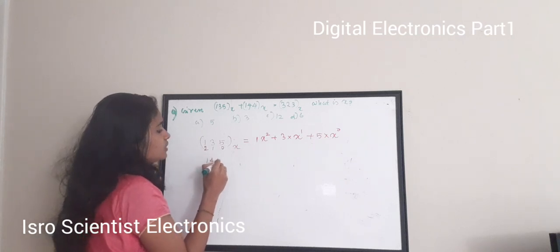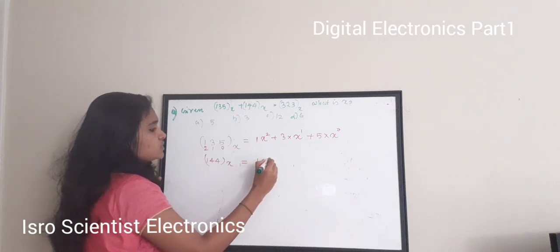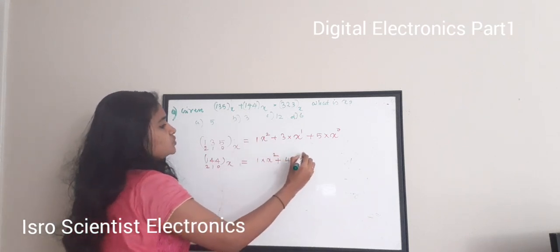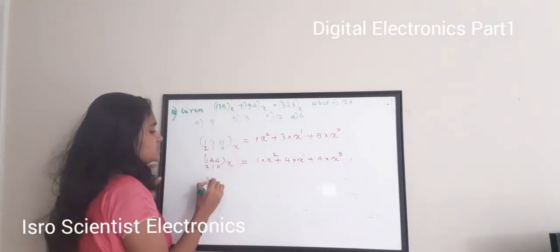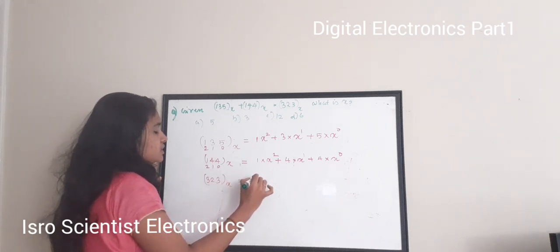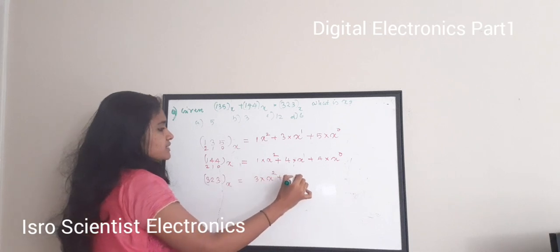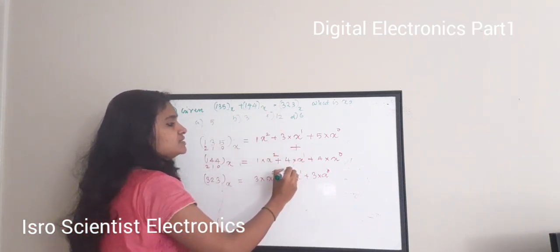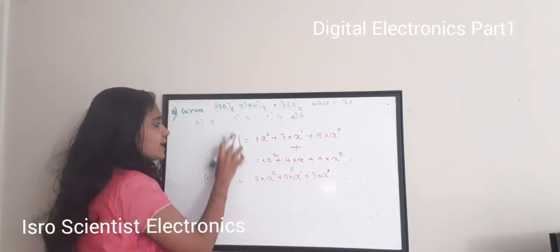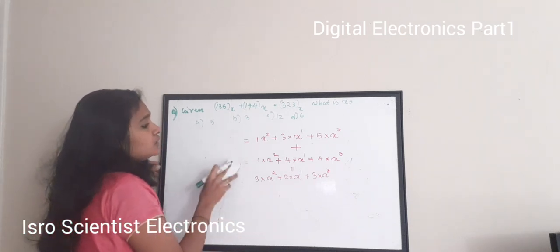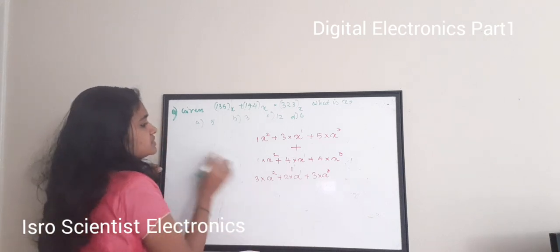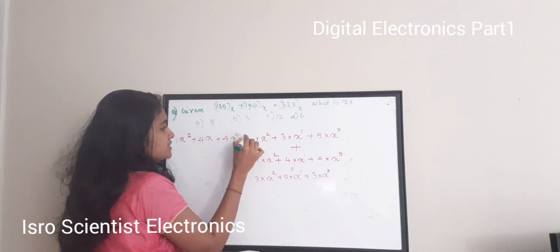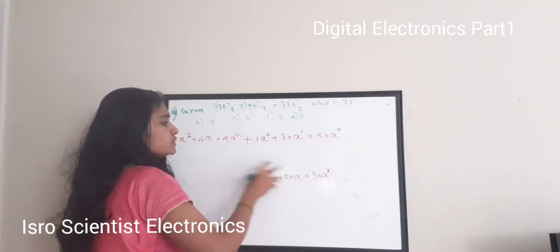Similarly, 144 to base X is 1·X² + 4·X¹ + 4·X⁰, and 323 to base X is 3·X² + 2·X¹ + 3·X⁰. According to the equation, the sum of the first two equals the third. So equating: (1·X² + 3·X + 5) + (1·X² + 4·X + 4) = 3·X² + 2·X + 3.